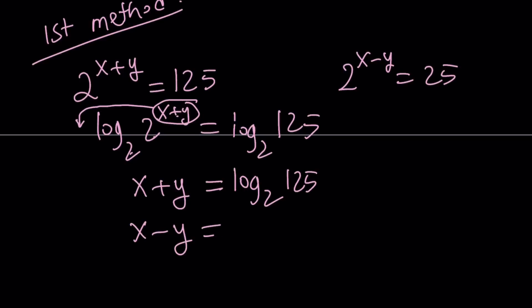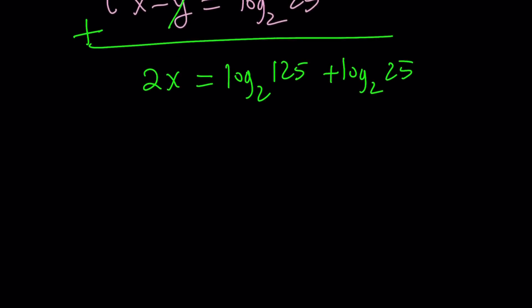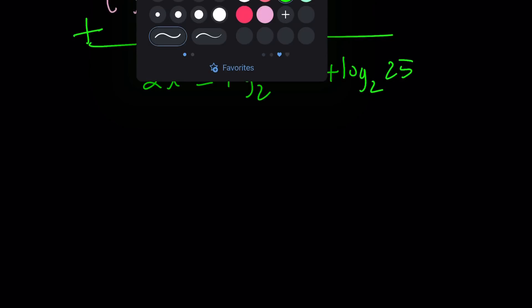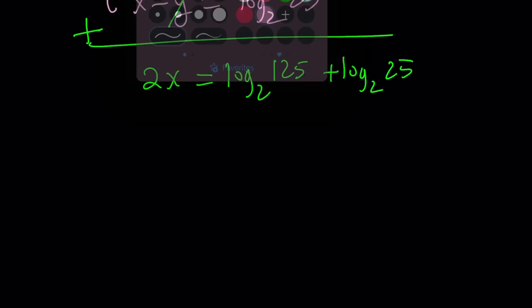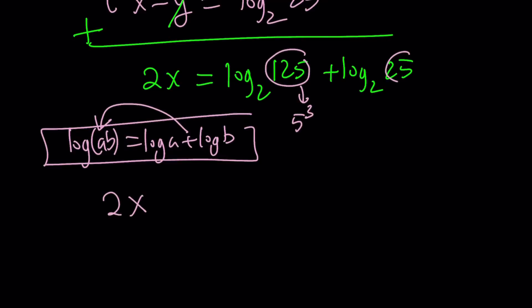We can write x minus y as log 25 with base 2 again. Now I got a system. What can I do with it? I can solve it. Elimination. I can add these two equations. That's going to eliminate the y, giving us 2x equals log 125 plus log 25, both in base 2. Let's combine these two logs using the product property. If you have log of a times b, it can be written as log a plus log b.